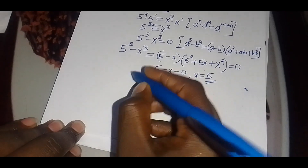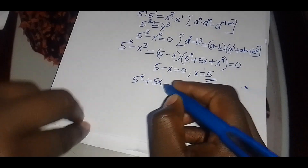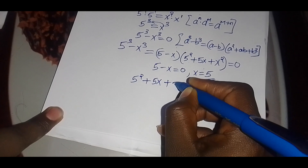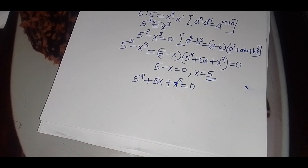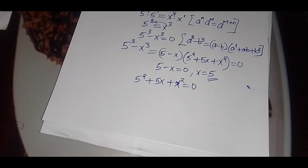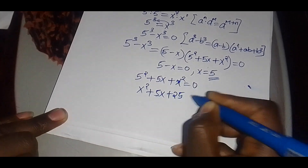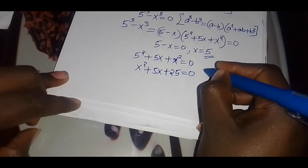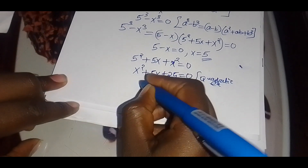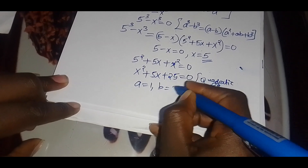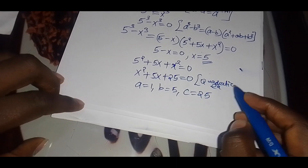For the second part, we have 5 squared plus 5x plus x squared equals 0, which gives the quadratic equation x squared plus 5x plus 25 equals 0. This is a quadratic equation with values a equals 1, b equals 5, and c equals 25.